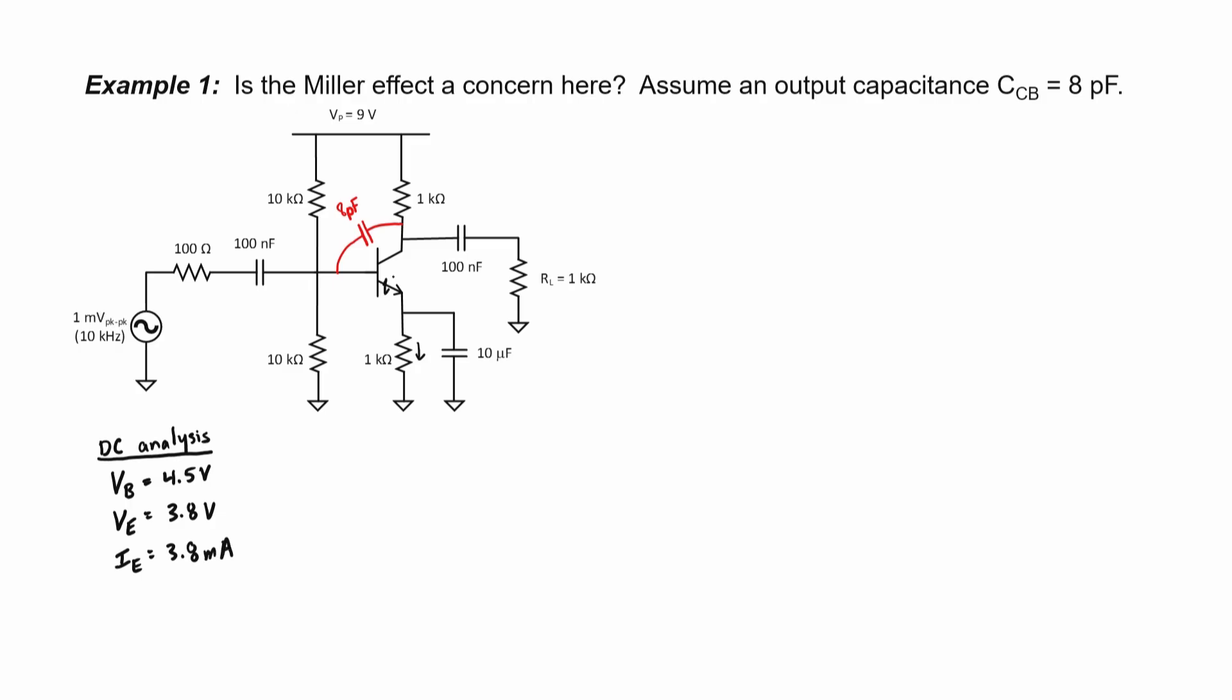My emitter resistor, little r sub e, can be estimated as 26 divided by my emitter resistance expressed in milliamps. That works out to be 6.8 ohms in this problem.